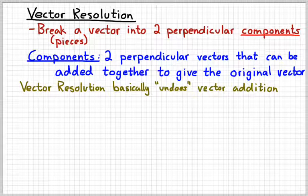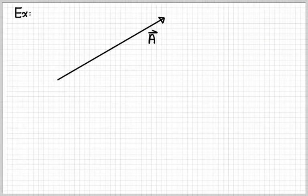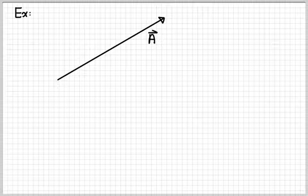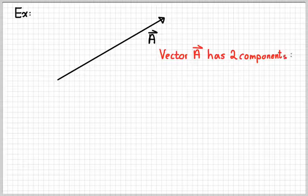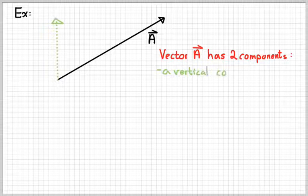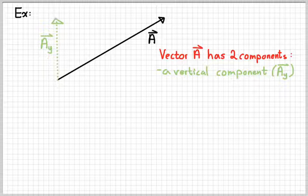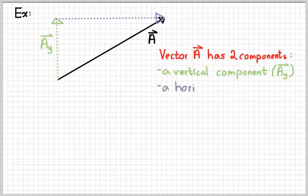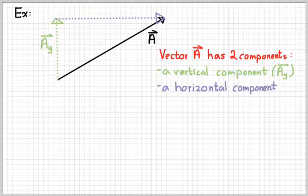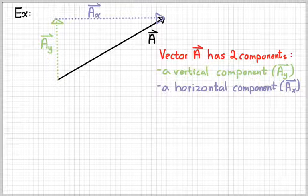So let's see if a diagram can help this make a little bit more sense. Suppose for example we have vector A which kind of points up and to the right. We can break vector A up into two components: a vertical component, I'm going to give that the name A subscript y, y because it's vertical, and a horizontal component, I'm going to give that the name A subscript x, x for the horizontal axis. If you add those two components up then you would get back to the original vector A. So Ay and Ax are called the components of A.